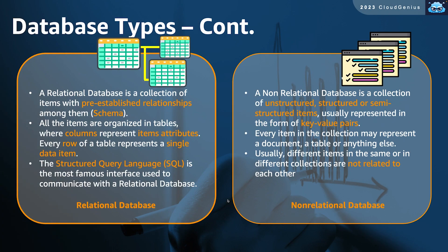Another way to classify databases is based on the database type and how the data is structured. One type is known as relational databases, while the other type is called non-relational databases. In relational databases, we deal with a collection of tables or items that have strong and pre-established relationships linking all of these tables together. We refer to these relationships and format as the database schema. Within this schema, the data is organized into tables, and every table has a well-defined structure of rows and columns.